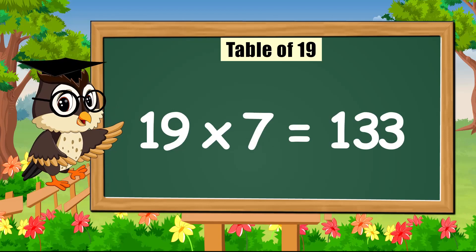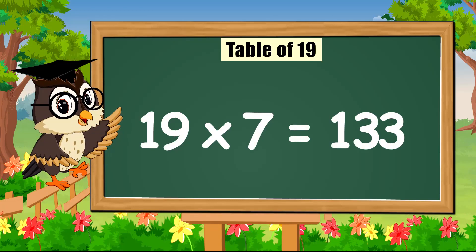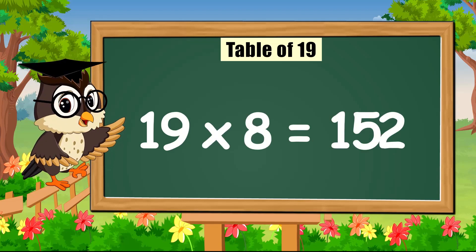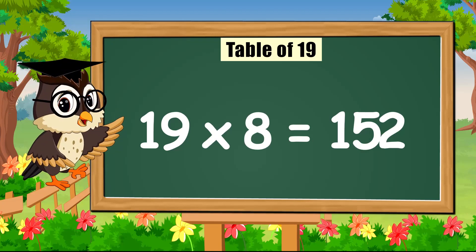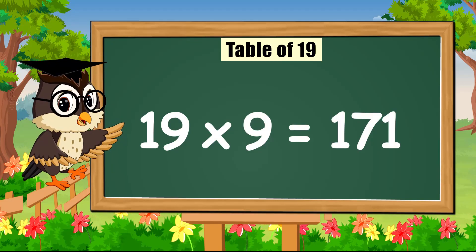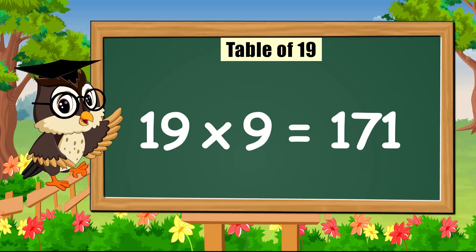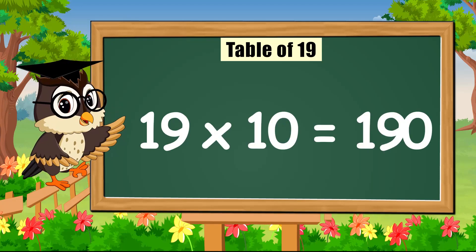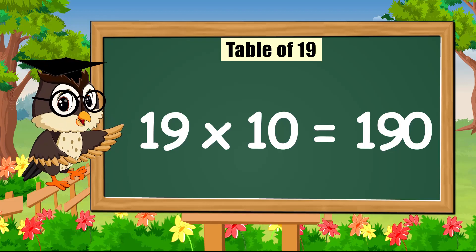19 times 7 is 133. 19 times 8 is 152. 19 times 9 is 171. 19 times 10 is 190.